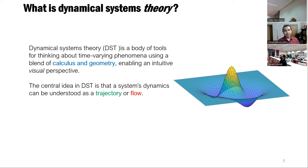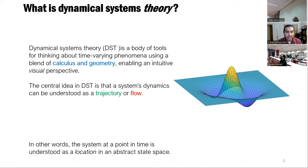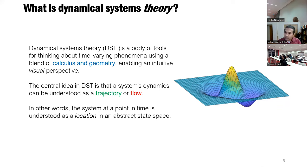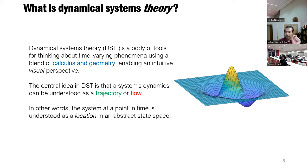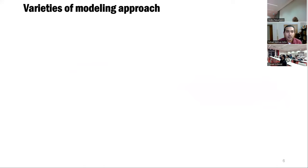The central idea in dynamical systems theory is that a system's dynamics can be understood as a trajectory or a flow. However complicated the system is, it's all boiled down to a point or a location in an abstract state space — the entire system, however many moving parts it has, is encoded in a point in a space. I touched on this the last time I spoke, but thought it was worth revisiting.